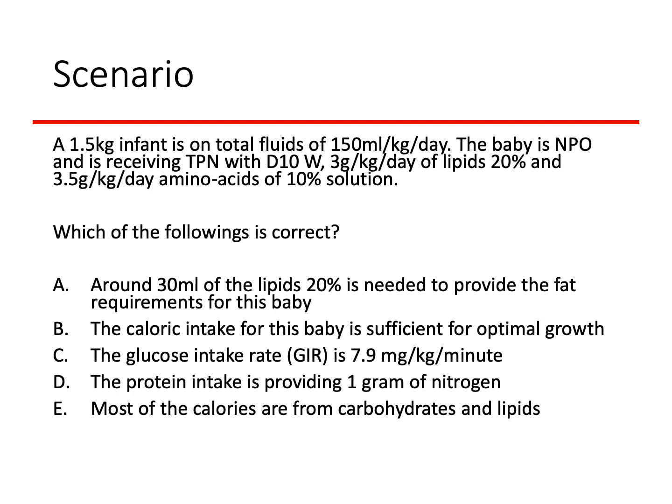You have a 1.5 kilogram infant on total fluid of 150 ml per kilogram per day. The baby is nil by mouth and is receiving total parenteral nutrition with D10W. The baby is also receiving 3 grams per kilogram per day of lipids 20%, and 3.5 grams per kilogram per day of amino acids at 10% solution. The question asks which of the following is correct: around 30 ml of lipids 20% is needed to provide the fat requirements; the caloric intake is sufficient for optimal growth; the glucose infusion rate (GIR) is 7.9 mg/kg/min; or the protein intake is providing 1 gram of nitrogen.